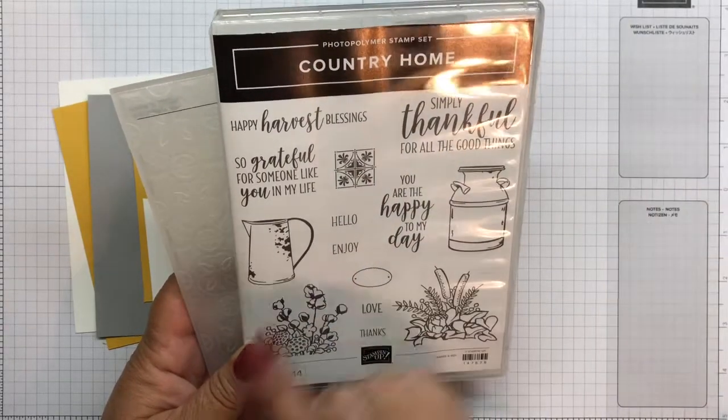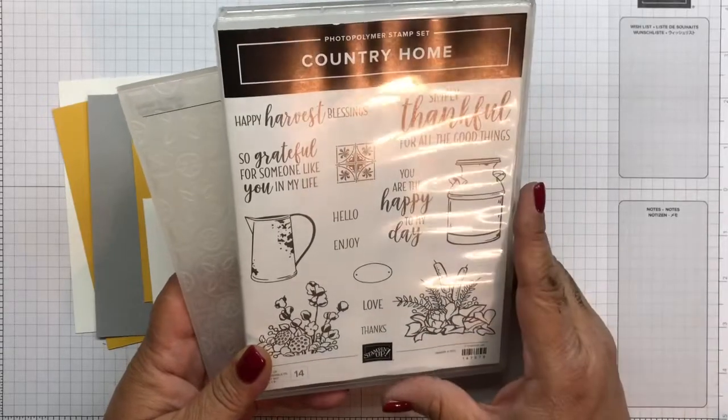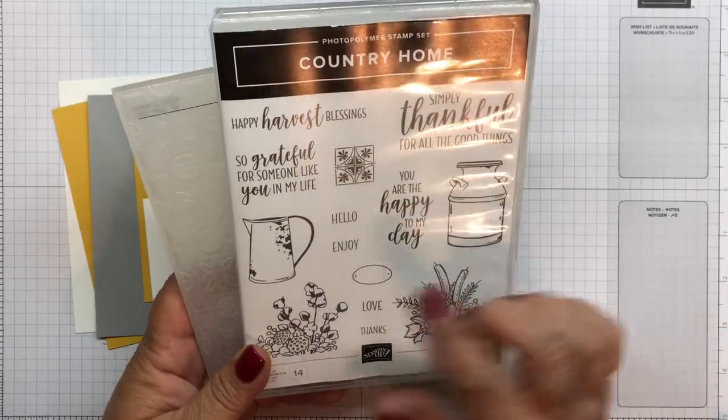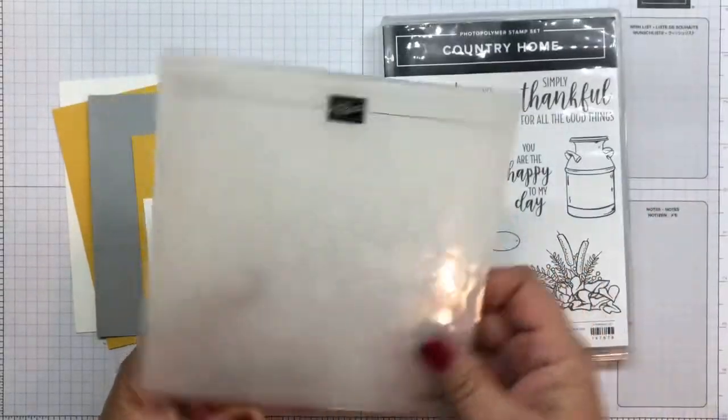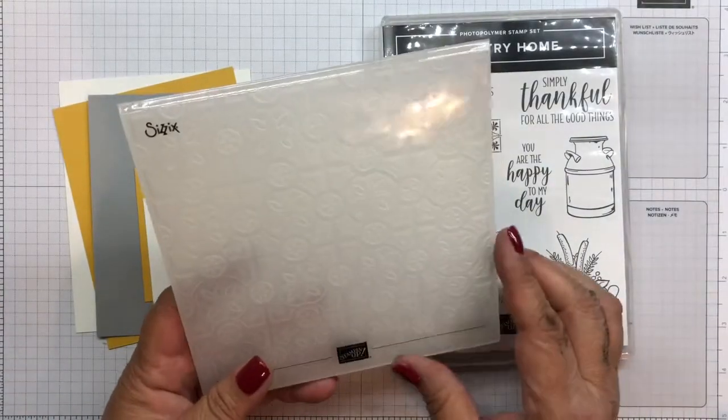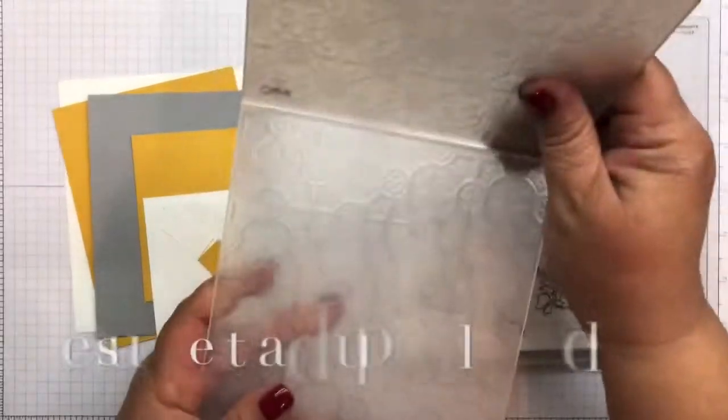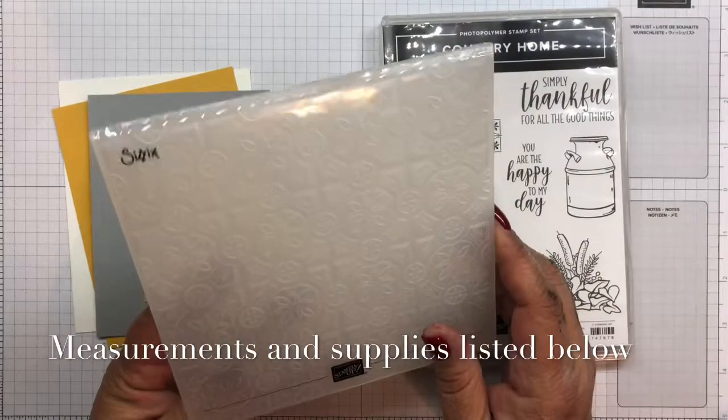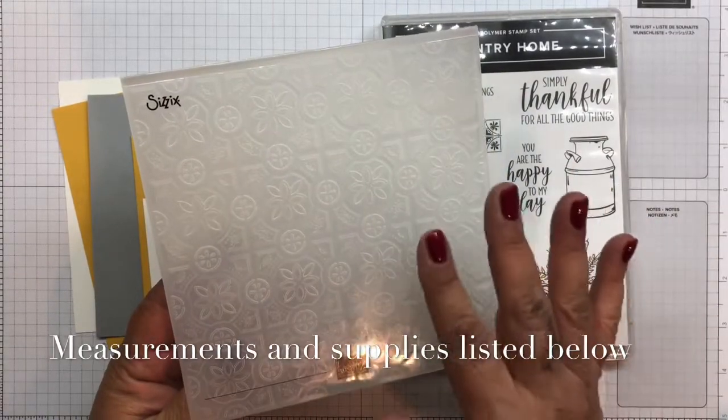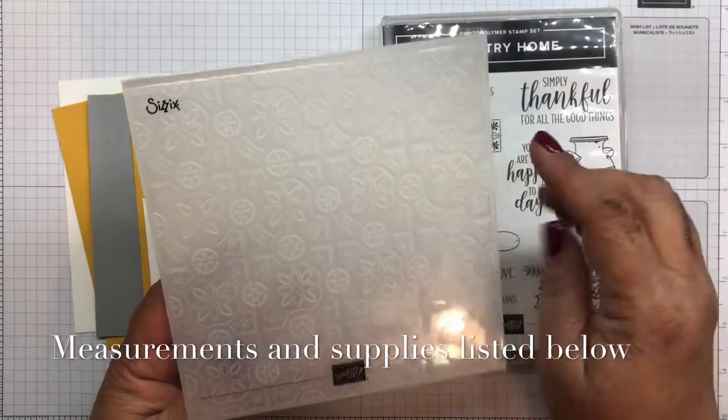But this really reminds me of my home, country home. So I really wanted to make a card, just a hello card. And we're also going to be using this embossing folder called Tin Tile. I think it's Tin Tile or Tile Tin. It'll be down in the description below.